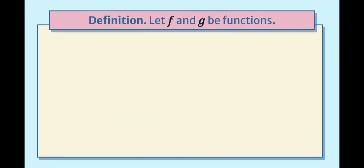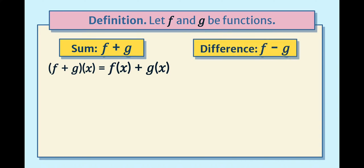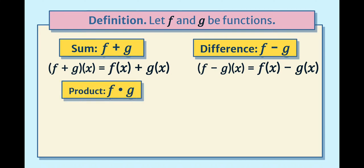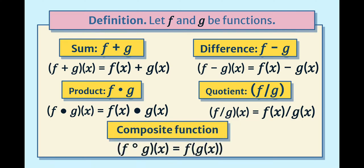By definition, let f and g be functions. The sum: (f + g)(x) = f(x) + g(x). The difference: (f − g)(x) = f(x) − g(x). The quotient: (f / g)(x) = f(x) / g(x). For composition of functions, f composed of g of x is written as (f ∘ g)(x) or f(g(x)).